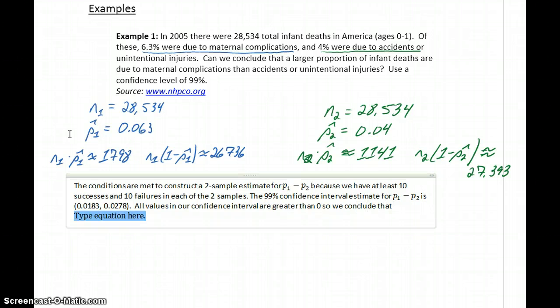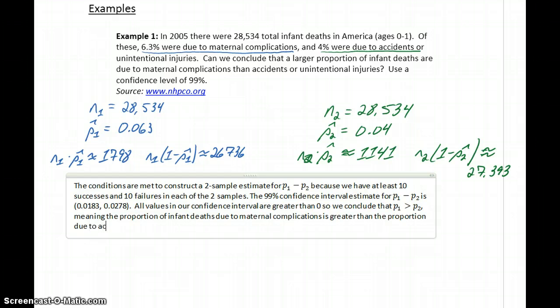So we conclude that P1 is greater than P2, which in this case means that the proportion of infant deaths due to maternal complications is greater than the proportion due to accidents or unintentional injuries.